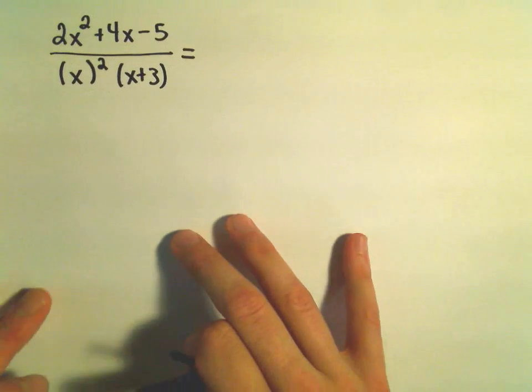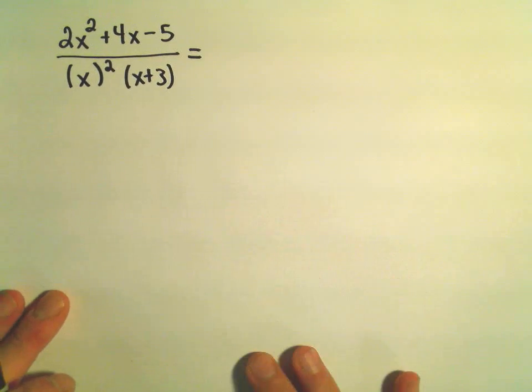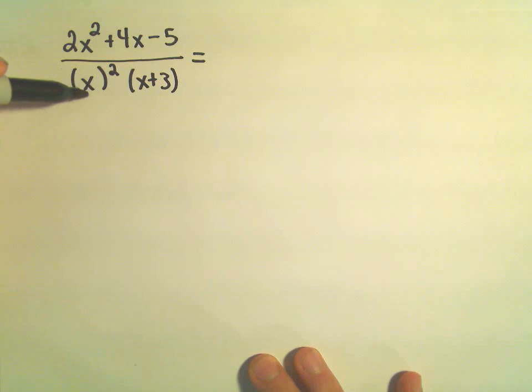when we do our partial fraction decomposition, to me I see a linear factor, which is x. But it's been repeated because it's being multiplied by itself. We could write x times x.